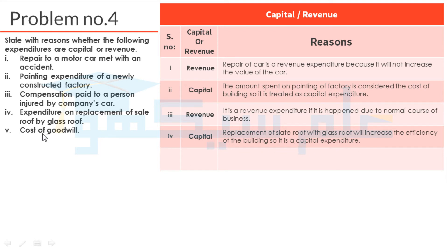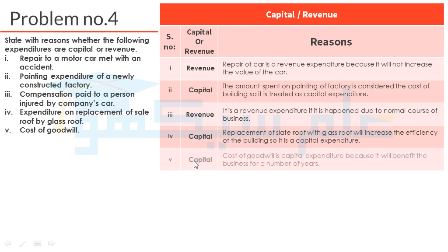The last one is Cost of Goodwill. Goodwill is an intangible asset and it is used in business for many years. That is why it is also a capital expenditure. Cost of goodwill is capital expenditure because it will benefit the business for a number of years.